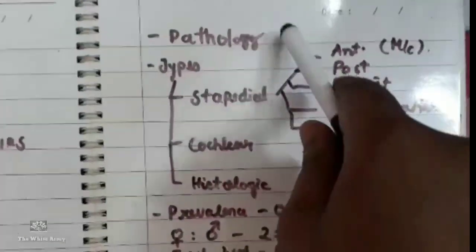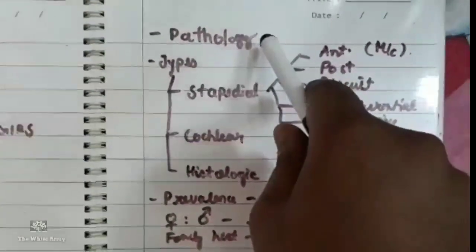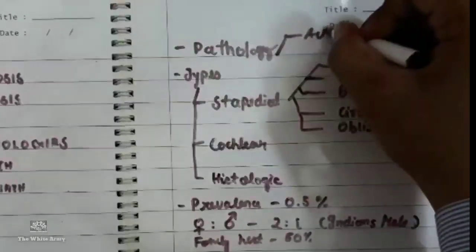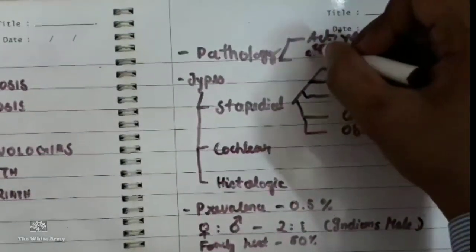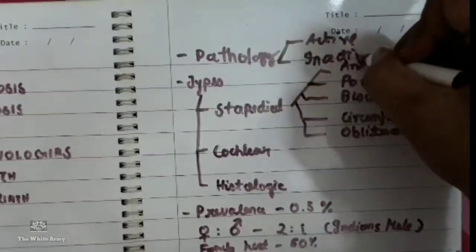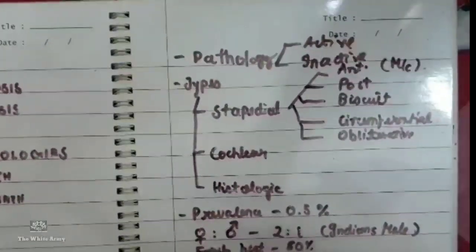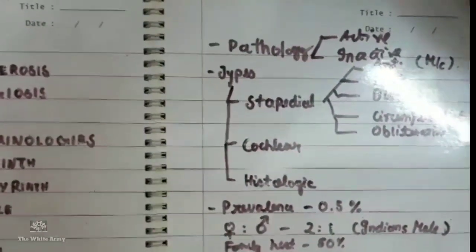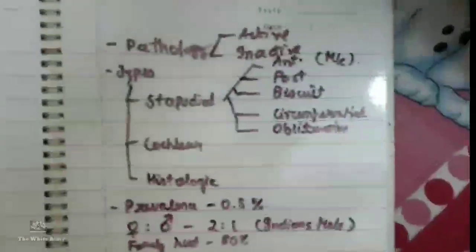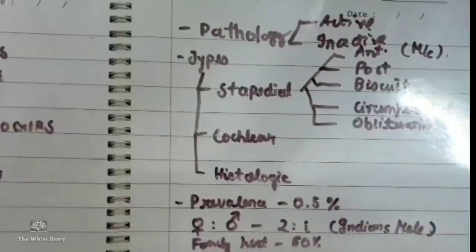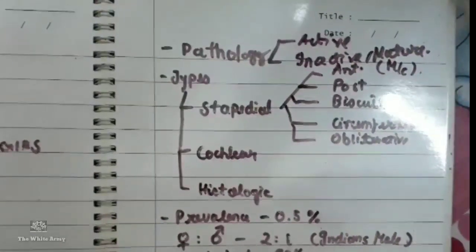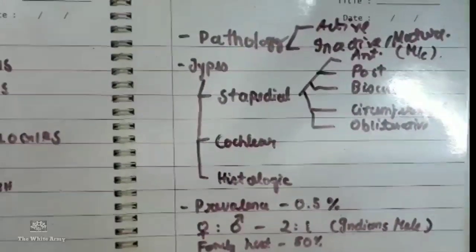Histologically, otosclerosis can be either active or inactive. In active disease, bone is progressively forming, increasing in size, and is filled with blood vessels, marrow spaces, and a blue connective tissue matrix. Inactive disease represents mature foci with less vascularity and mature bone formation. The active part will rapidly and progressively spread, while the inactive part remains stable.